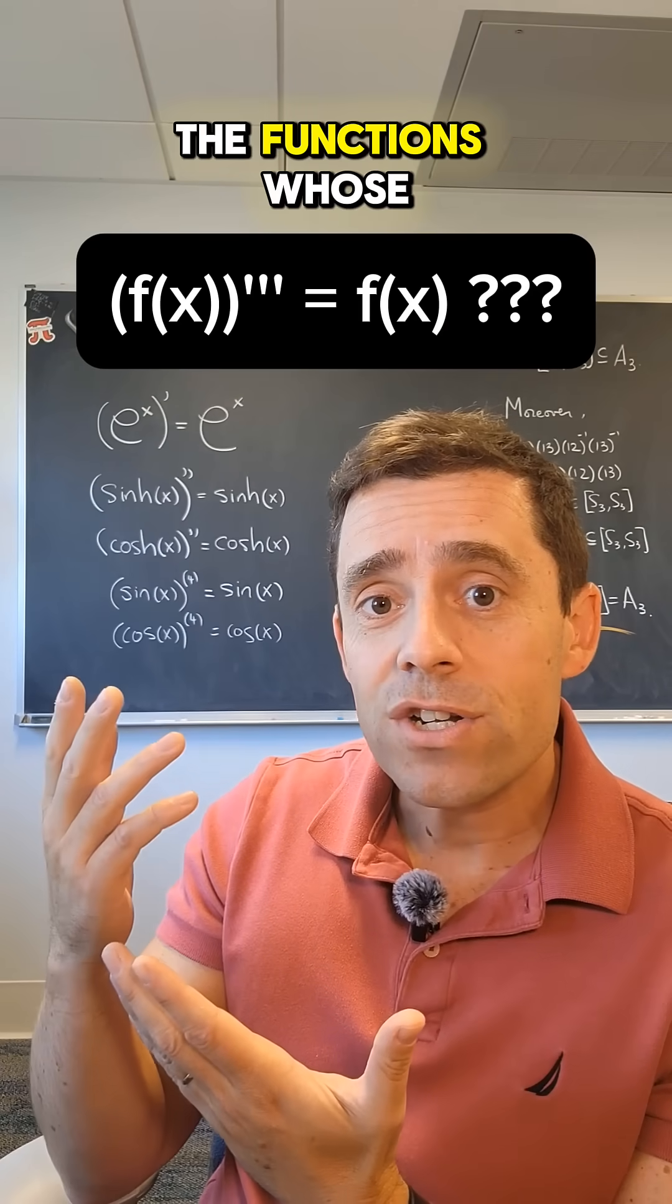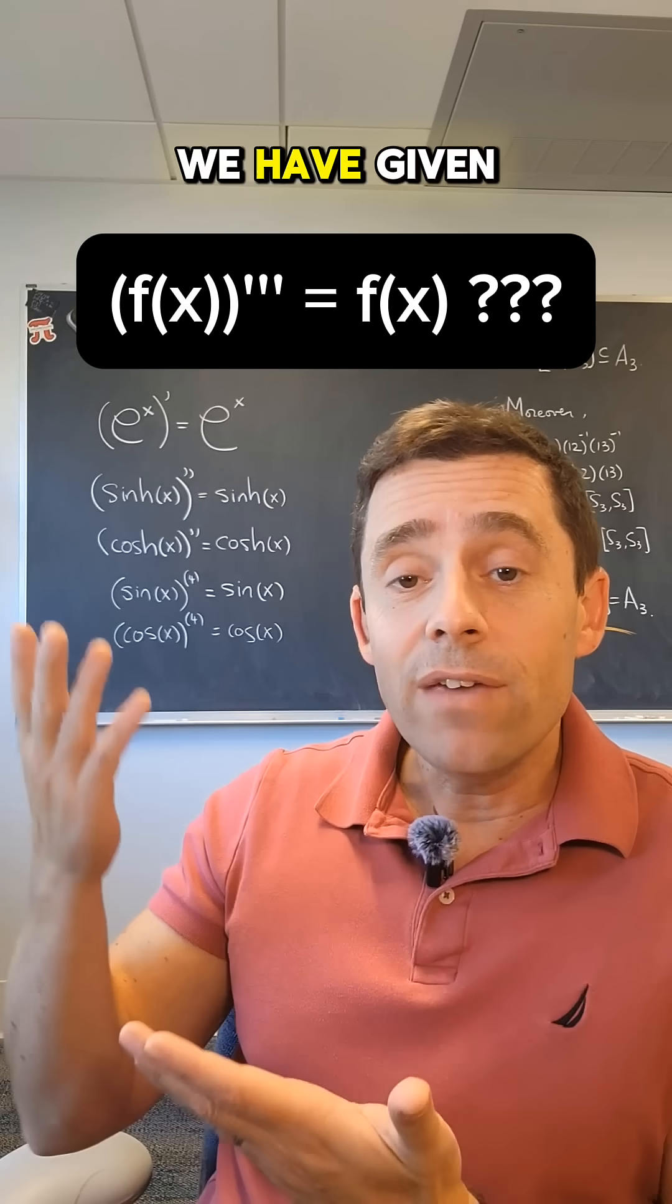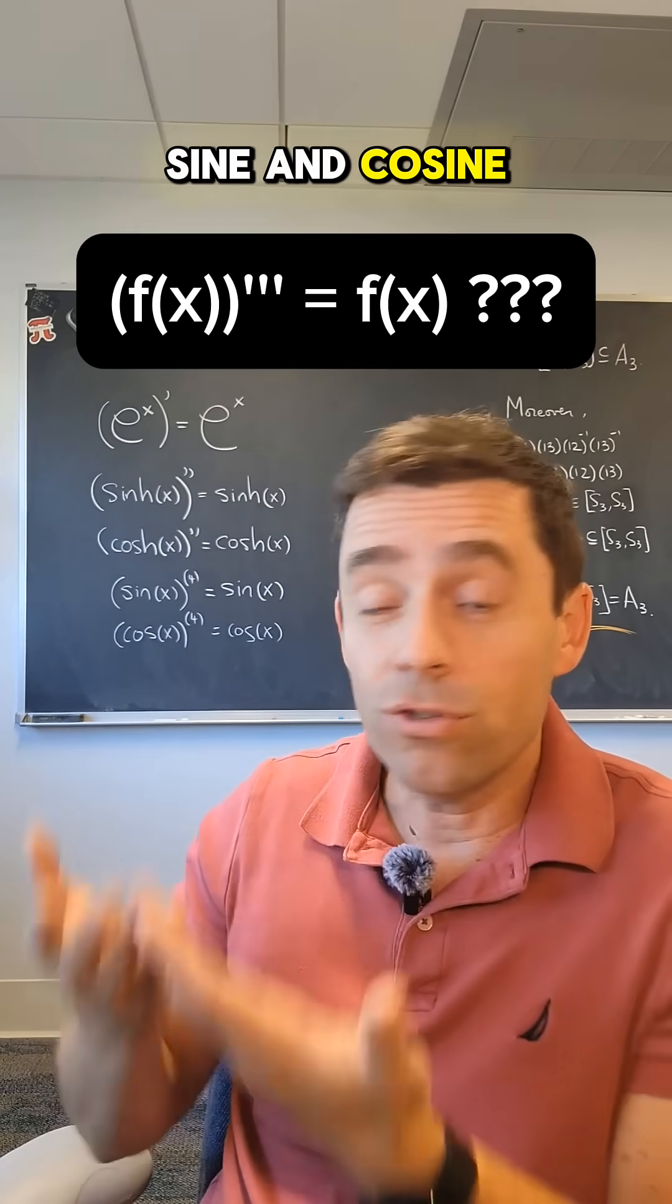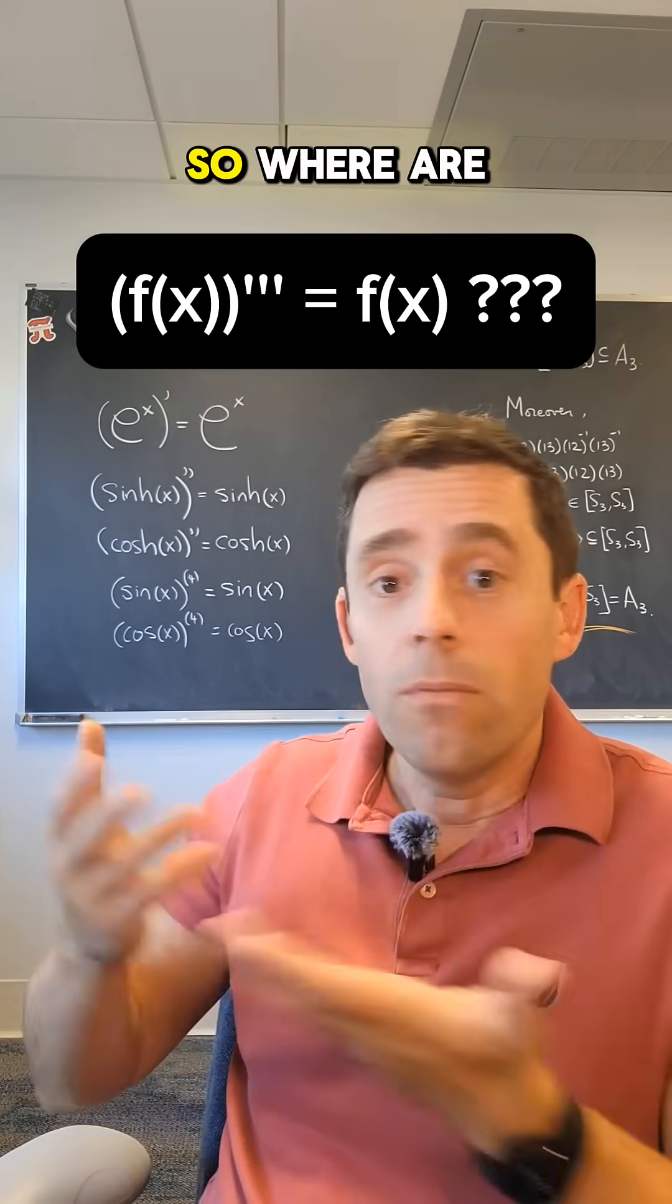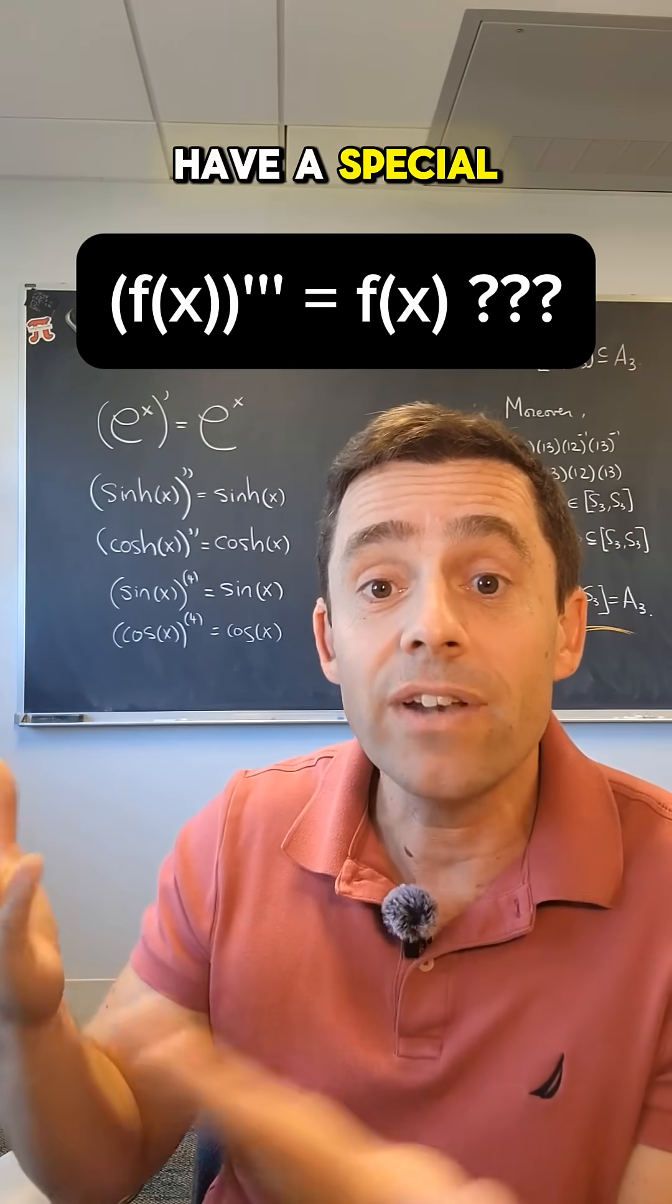So where are the functions whose third derivative is itself? We have given special names to the exponential function, to the hyperbolic sine and cosine, to sine and cosine. So where are these functions, and why don't they have a special name?